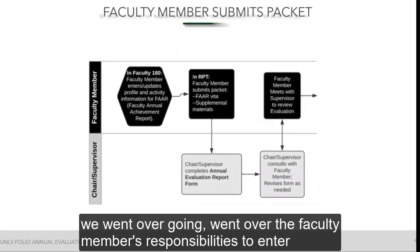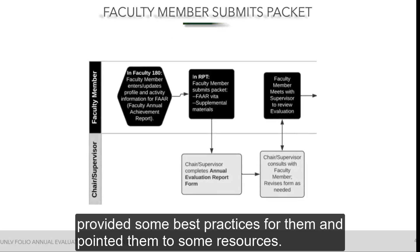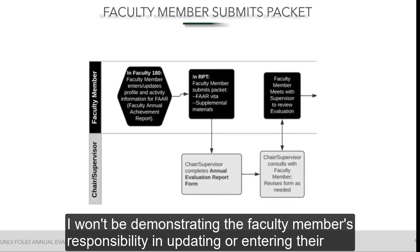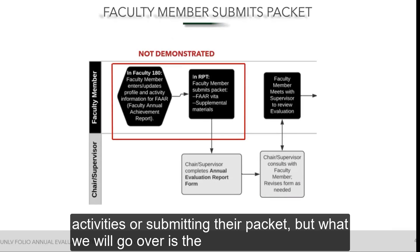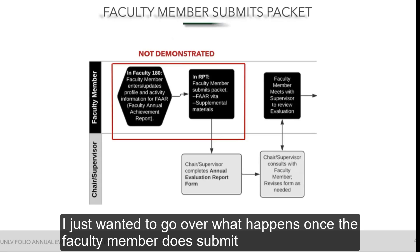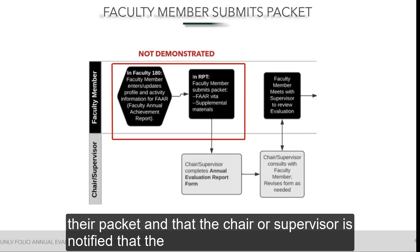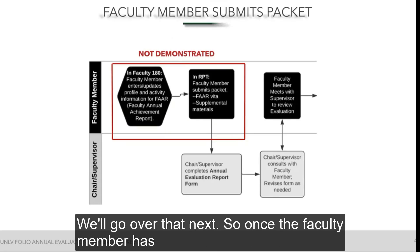In our training session for faculty, we went over the faculty member's responsibilities to enter and update their profile and activity information in their FAR, and we provided some best practices and resources. I won't be demonstrating the faculty member's responsibility for entering activities or submitting their packet, but we will go over the chair or supervisor's responsibility to complete the annual evaluation report form. First, I want to go over what happens once the faculty member submits their packet and how the chair or supervisor is notified that the case is ready for their review.